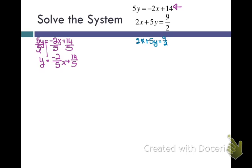Y equals negative 2 fifths x plus 14 fifths. Now I'm going to take this expression, which is y, and I'm going to substitute it in for y into my second equation.